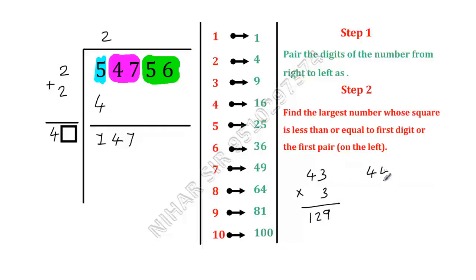Let us try 44 times 4. These 2 numbers must be same. 4 times 4, 16, 1. 4 times 4, 16 plus 1, 17. So this is greater, 176. So we have to consider 43 times 3.